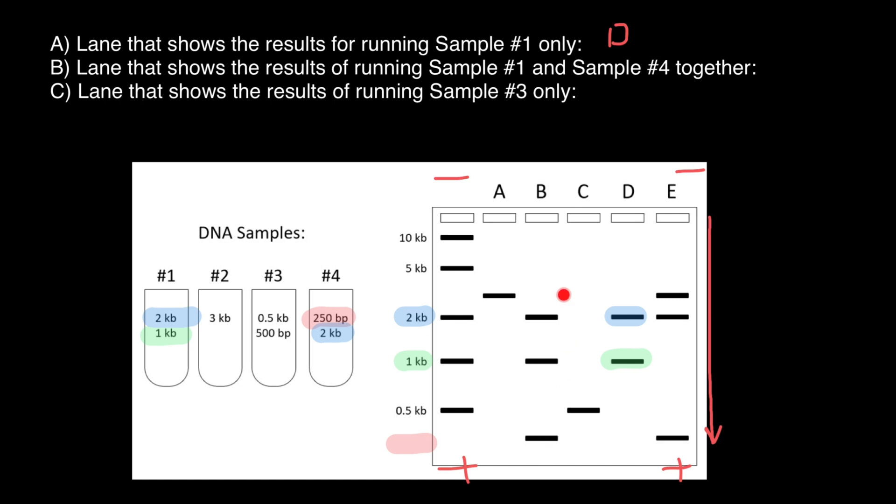As you see, both line B and line E have three bands. But only line B has bands of the sizes we're looking for. This is 250 base pairs, another one is 1000 base pairs or one kilobase, and another one 2000 base pairs or two kilobases. So our answer for the second question is variant B or line B.